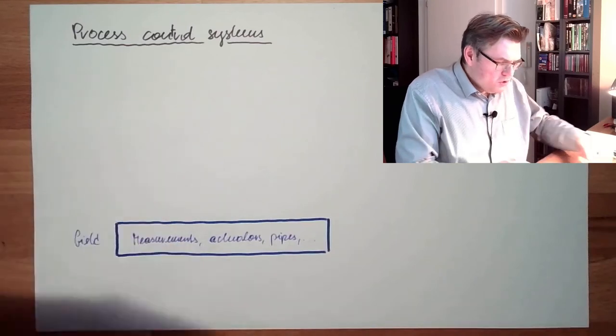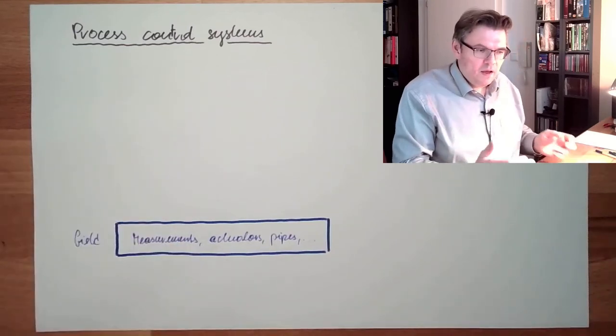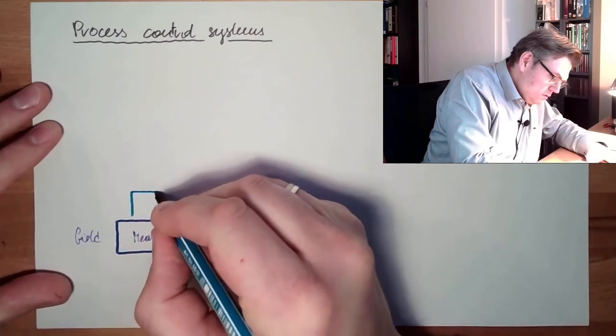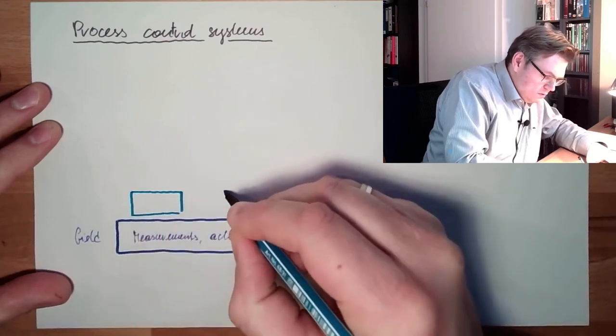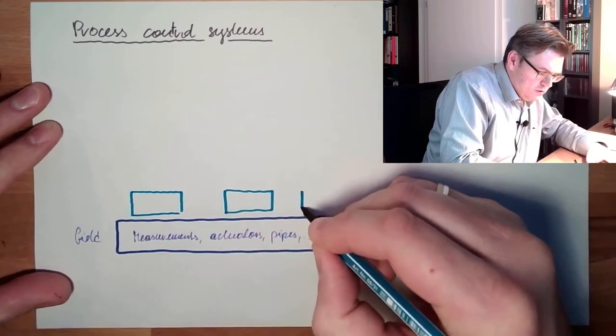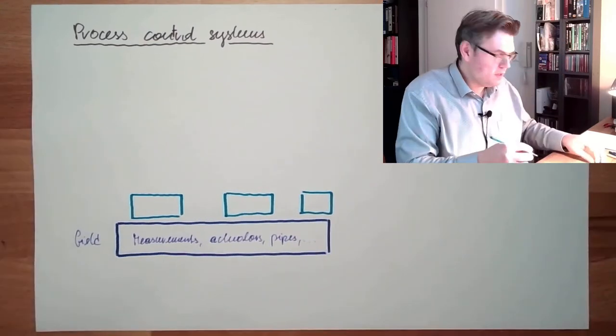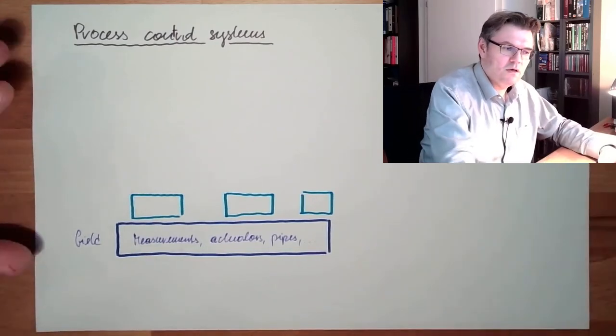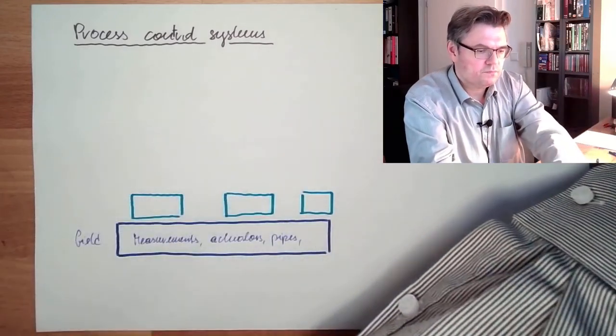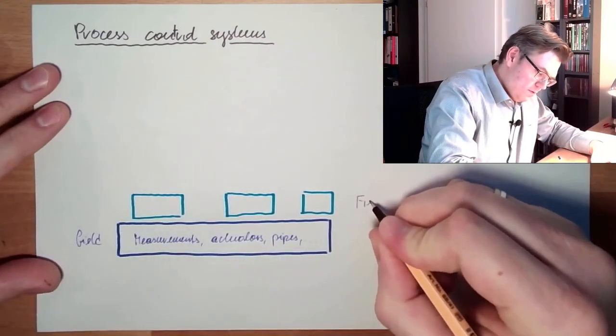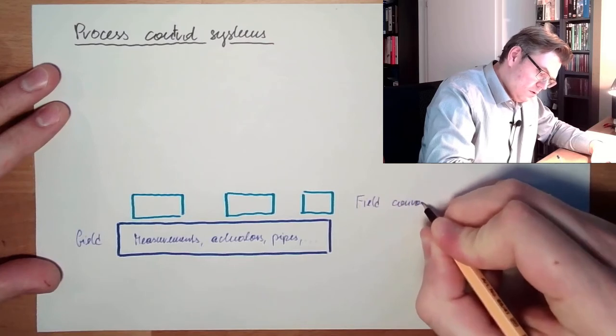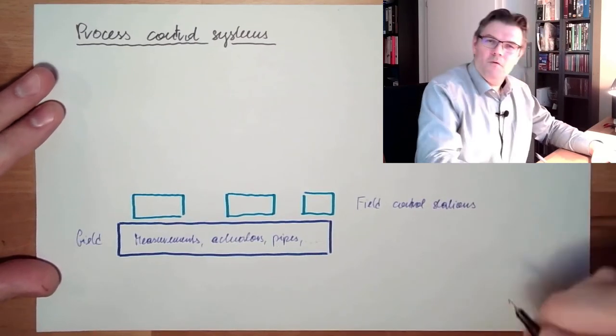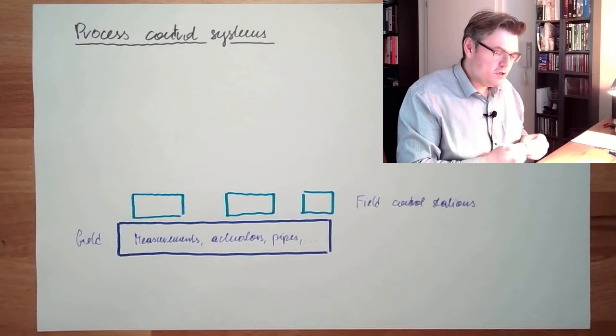This control is done very close here with different stations - small stations, bigger stations, whatever. These stations are called field control stations, FCS.